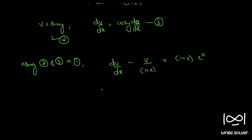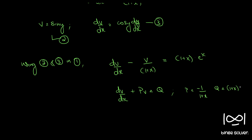The standard form of a linear differential equation is dv/dx plus p into v equal to q, where p and q should be either constants or functions of x alone. Here, p is minus 1 by (1 + x) and q is (1 + x) into e^x. Both are functions of x alone.